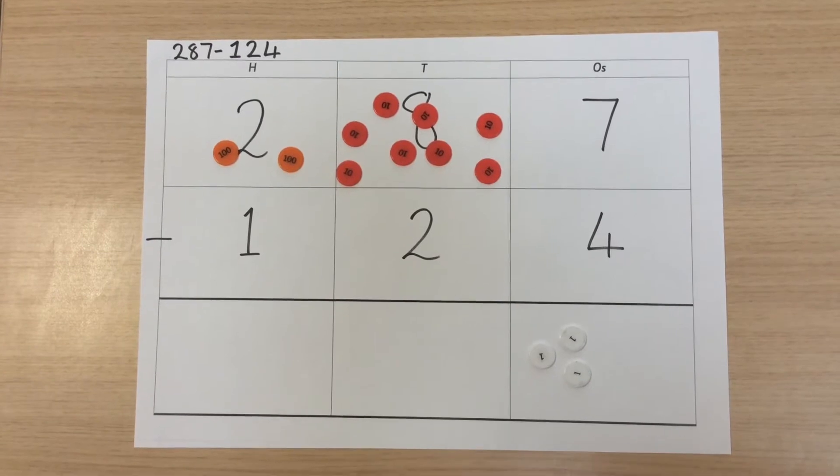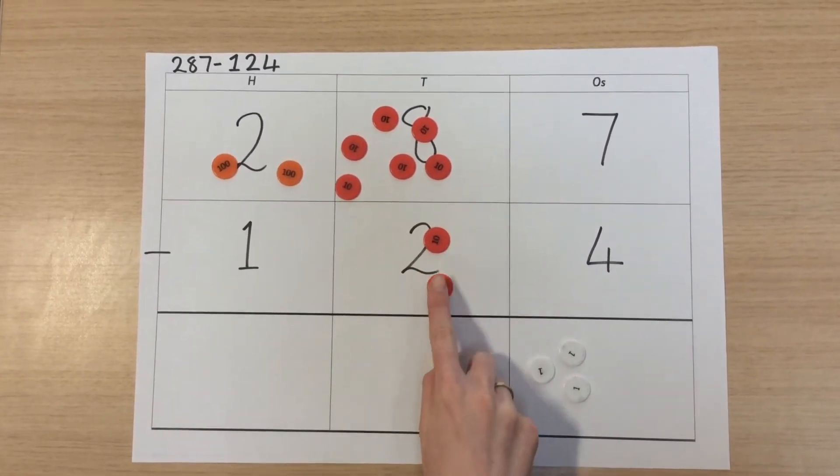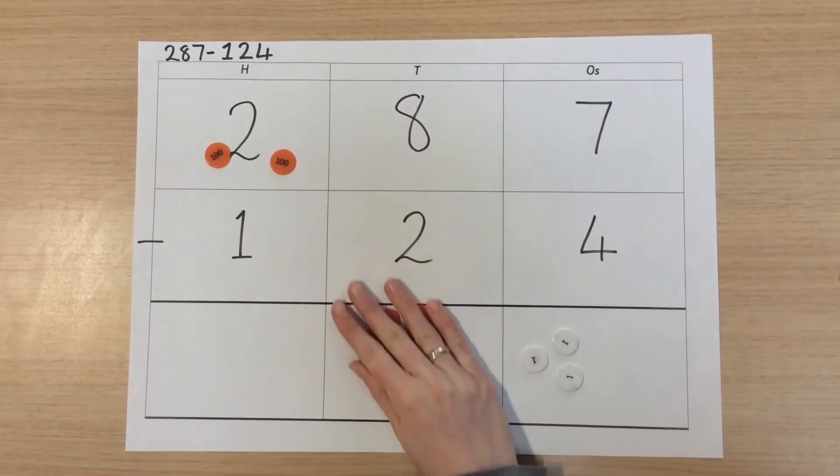We can then repeat the same process in our tens column. So we take two tens, we check them, and then we can subtract them away. We take what is left and move them down to our answer box.